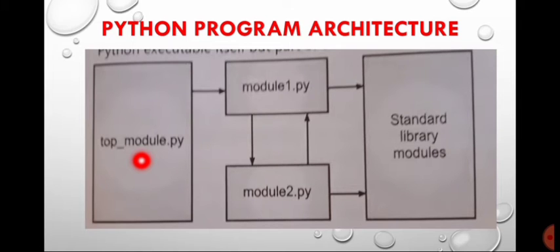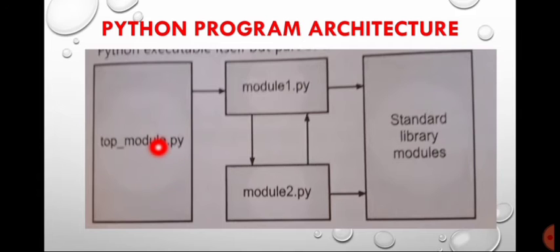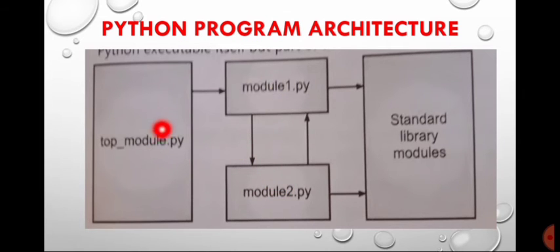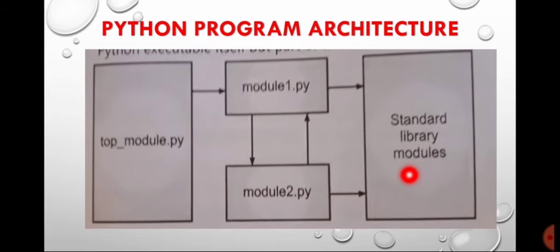The figure shows the Python program structure with three file types. top_module.py is a top-level Python file which imports tools defined in Module 1 but also has access to Module 2 through Module 1. The two custom modules can use each other's resources as well as other modules from the standard library. The importing chain can go as deep as needed; there is no limit on the number of imported files.